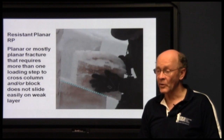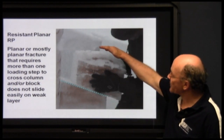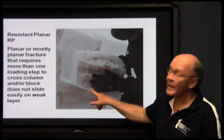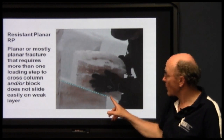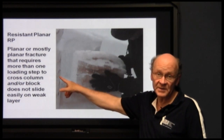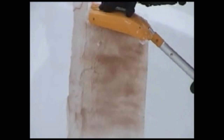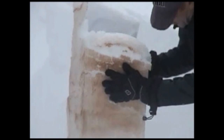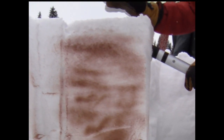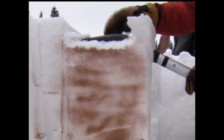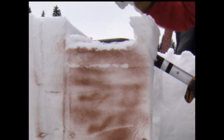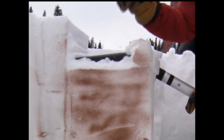Resistant planar, or RP, means that when tapping on top of the column, we see a fracture that either goes part way, we tap again and it goes the rest of the way, or if it goes all the way in one tap, when we grip the sides of the block it doesn't slide easily — it drags. In this example of a resistant planar fracture, the crack does not cross the column in a single loading step. Near the top of this column, there are two more RP fractures in which more than one tap is required to drive the crack across the column.